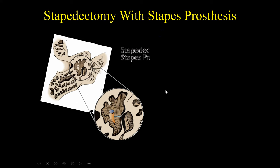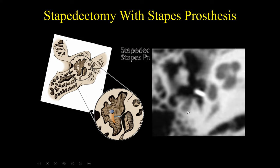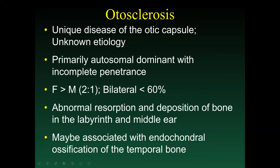Another specific type of procedure is a stapedectomy. In a stapedectomy, the incus and malleus are preserved but there is selective replacement of the stapes. Here is the head of the malleus, the short process of the incus, and the stapes prosthesis — sometimes called a piston prosthesis — which is attached to the incus and pushes against the oval window. This is typically performed for otosclerosis.